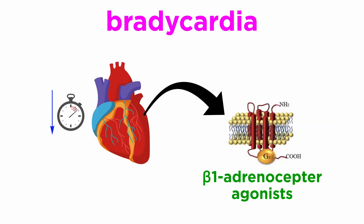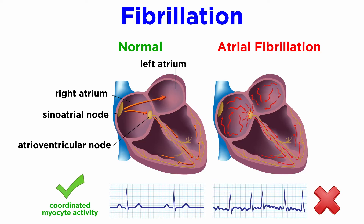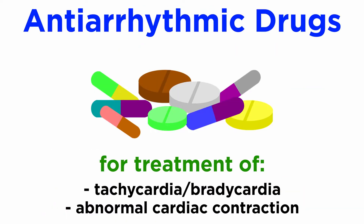Other types of bradycardia are treated with beta-1 adrenoceptor agonists, which will be discussed in a future tutorial. Fibrillation occurs when the coordination of the myocytes' contractility doesn't rhythmically trigger the neighboring myocytes to contract in a spatially sequential way, so the myocytes quiver in a disjointed or uncoordinated manner. This can be caused by a heart attack damaging the cardiac tissue, or a rapid drop in blood pressure. These conditions are the main ones for which antiarrhythmic drugs are deployed.